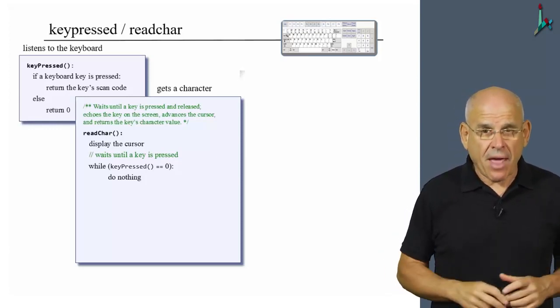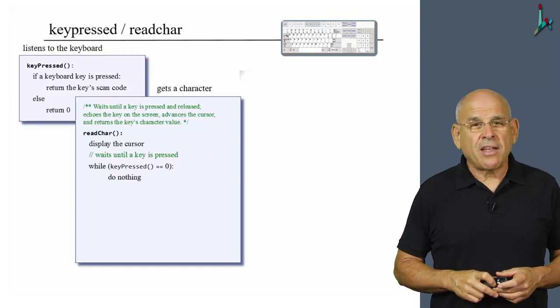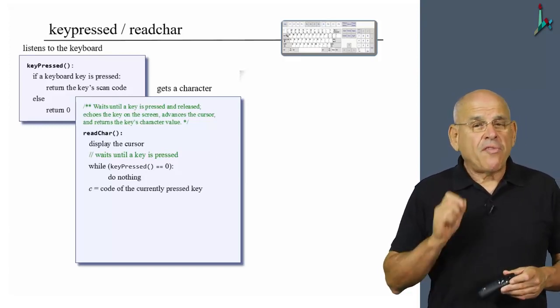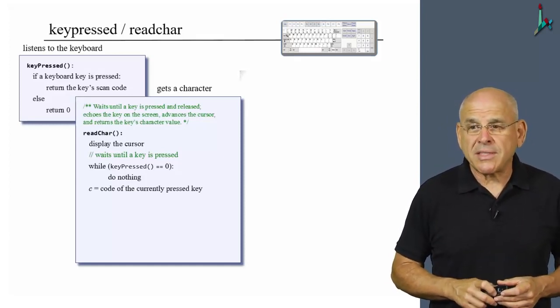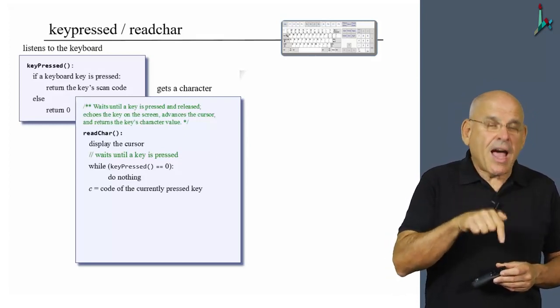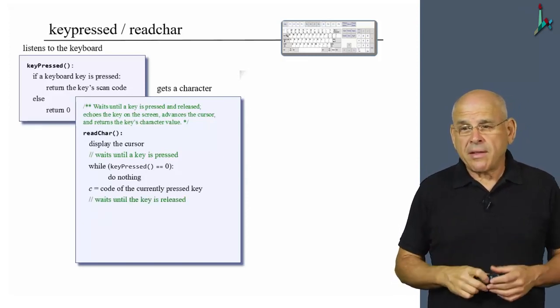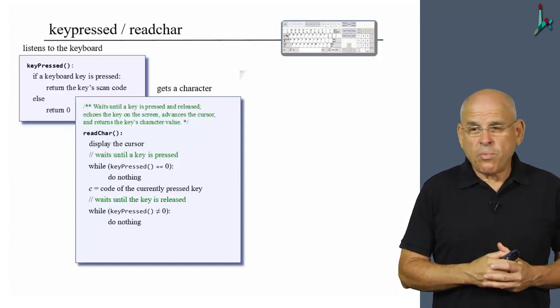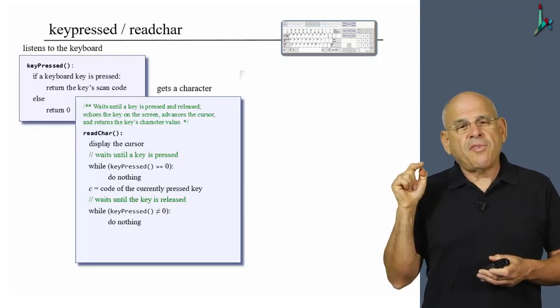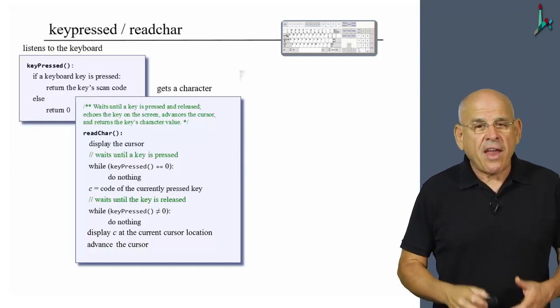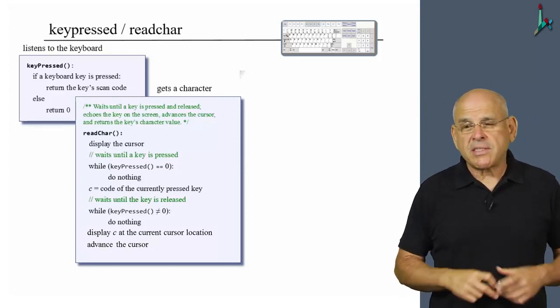This loop essentially amounts to sampling the keyboard. We sample the keyboard until something happens. When something happens, key press will not be zero any longer. So we're going to be ejected outside this while loop. And then, we can finally capture the key that the user has pressed. We put it in some variable that I called c. And now remember, the finger is down. The finger is down, and we don't know for how long. So we're going to wait until the key is released, using a very similar loop, so that as long as the finger is down, we do nothing. Once the finger goes up, key press will become again zero. And then, we can finally give the user some feedback on what he or she pressed and return c to the caller.